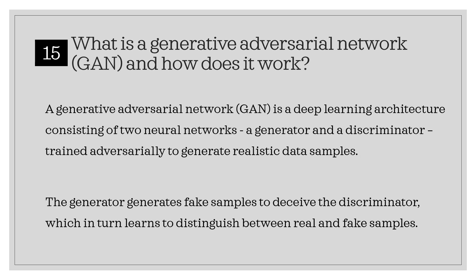What is a GAN network, and how does it work? A generative adversarial network, or GAN, is a deep learning architecture consisting of two neural networks — a generator and a discriminator — trained adversarially to generate realistic data samples. The generator generates fake samples to deceive the discriminator, which in turn learns to distinguish between real and fake samples.